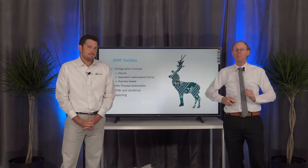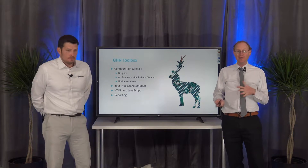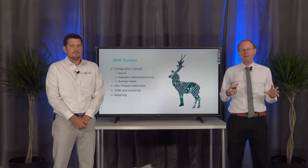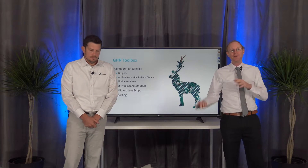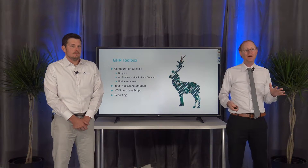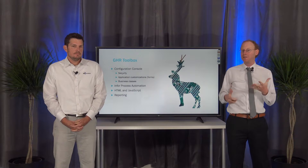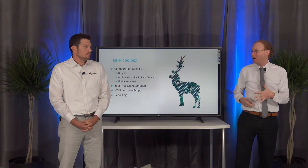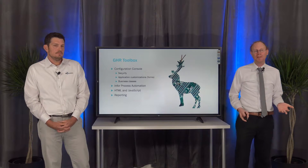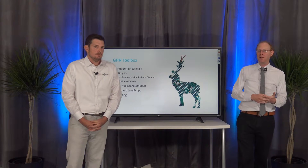Today we're going to walk through some typical HR events that would happen in an organization, and along the way we're going to point out some of the customizations that we've done to help wrap our GHR application specifically around our organization's business requirements for these various HR transactions. We'll be pointing out some of the different technology points we'll touch on, such as Configuration Console — the tool used for customizing security as well as customizing the application, the forms, the business classes within Global HR. We'll also be talking about flows in IPA, front-end customizations with HTML and JavaScript, and enhancing the overall solution with business intelligence.